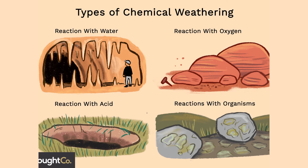Geologists differentiate between physical weathering and chemical weathering. Chemical weathering occurs whenever a chemical is responsible for the breakdown of a rock. Acid rain, for example, may expose rocks to acids that dissolve their minerals. Organisms also produce chemicals detrimental to rocks — plants in particular release chemicals from their roots that allow them to dissolve the surfaces of rocks and grow on top of them. Even the oxygen in the atmosphere may react with certain iron-bearing minerals, causing rocks to turn to rust and disintegrate.